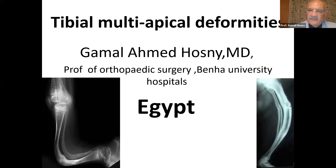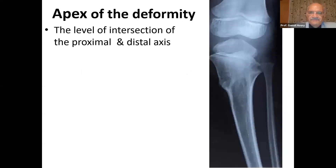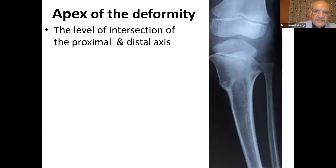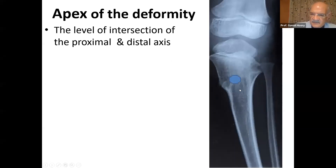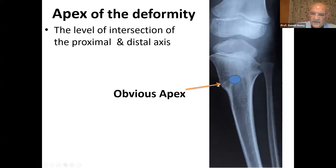I'm going to speak about typical multi-apical deformities. We are going to revise again the apex of the deformity and the CORA. I want to remind you that the apex of the deformity — the CORA — is at the level of intersection of the proximal and distal axis. So apparently here, if you just look, we have a CORA here and an apex of the deformity over there. It looks clear; it's called the obvious apex, and I think it's the real apex too.